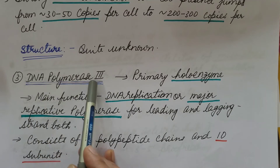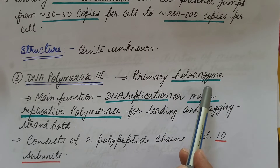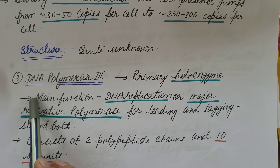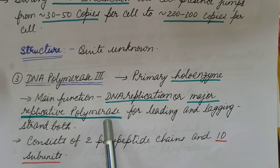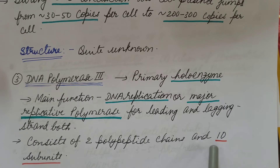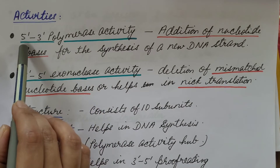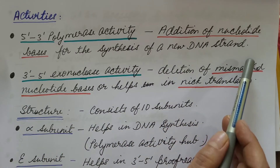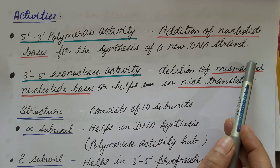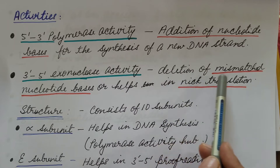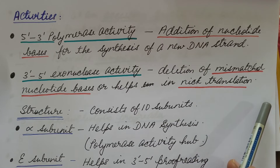The third type is DNA polymerase 3. It is the primary holoenzyme — a completely functional enzyme consisting of both enzyme and coenzyme. Its main function is DNA replication; hence it is known as the major replicative polymerase for both leading and lagging strands. It consists of two polypeptide chains and has 10 subunits. Its activities include 5'→3' polymerase activity for addition of nucleotide bases for new DNA strand synthesis, and 3'→5' exonuclease activity for deletion of mismatched nucleotide bases or nick translation.